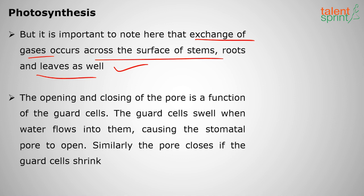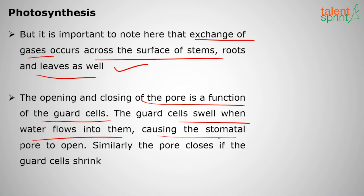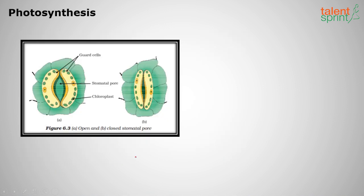The opening and closing of the stomatal pore is a function of guard cells. Guard cells cause the stomata to open when water flows into them, and the pore closes when the guard cells shrink. In the diagram you can see the guard cells, the stomatal pore, and the chloroplasts where chlorophyll is present, which is useful for conversion of sunlight to make food. When guard cells open, the stomata open so that gas exchange takes place.